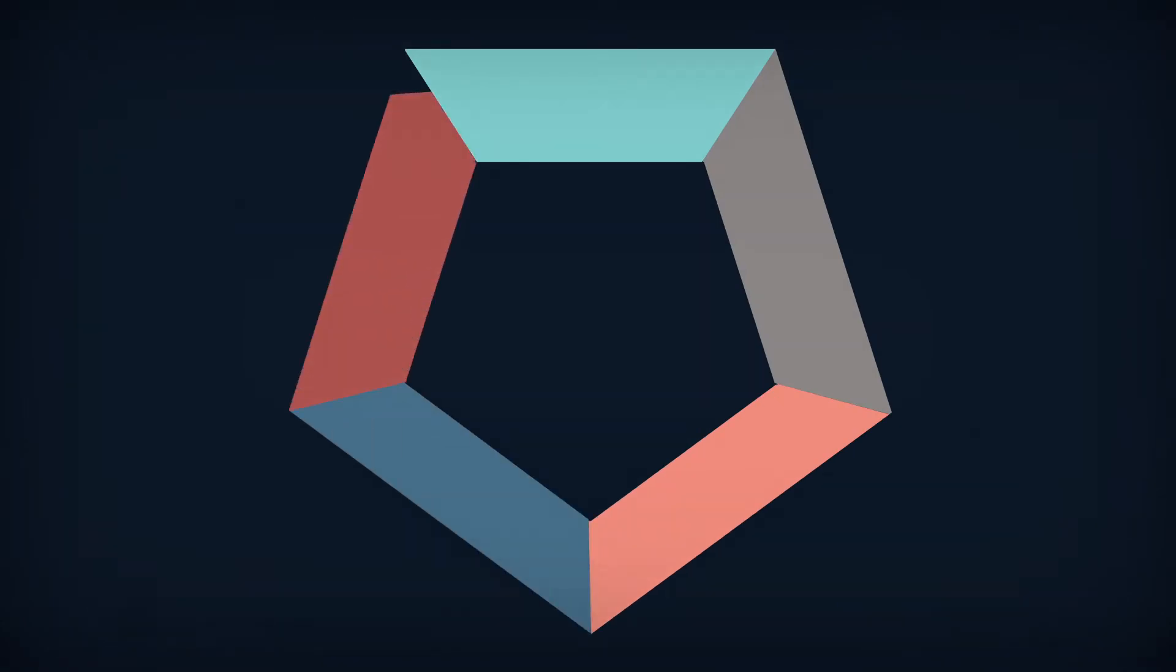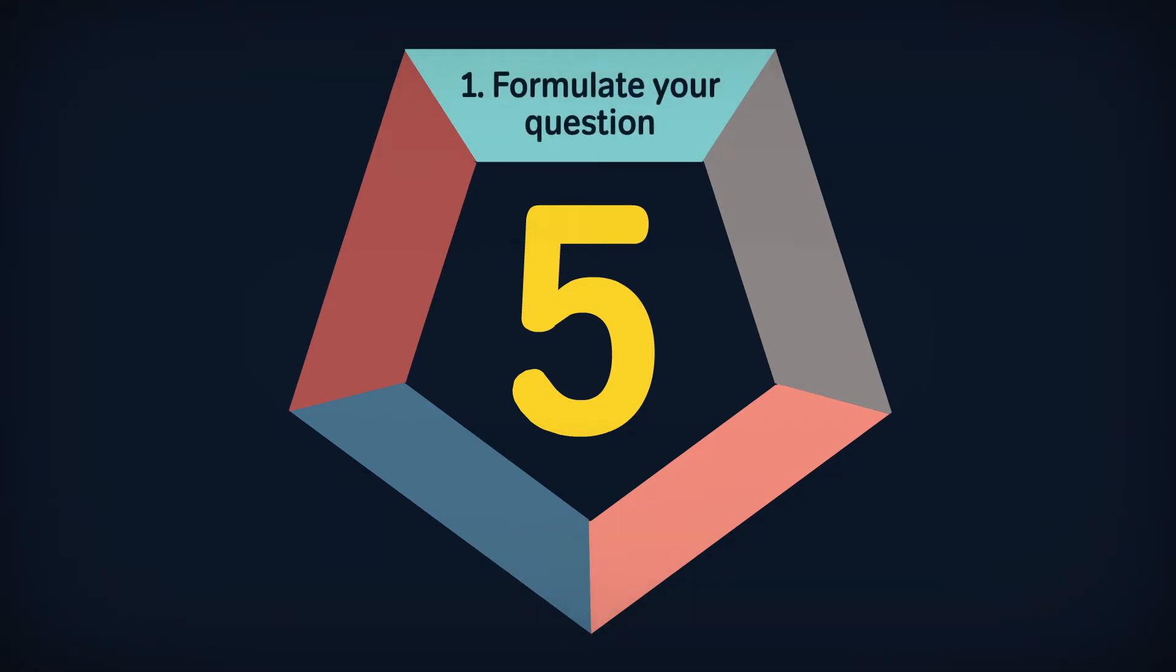There are many different ways of approaching critical thinking, but here's one five-step process that may help you solve any number of problems. One: Formulate your question. In other words, know what you're looking for.